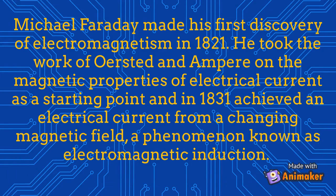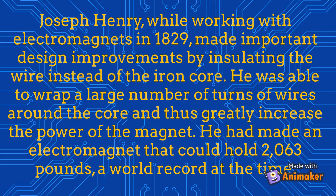Michael Faraday made his first discovery of electromagnetism in 1821. He took the work of Ørsted and Ampere on the magnetic properties of electrical current as a starting point, and in 1831 achieved an electrical current from a changing magnetic field — a phenomenon known as electromagnetic induction.